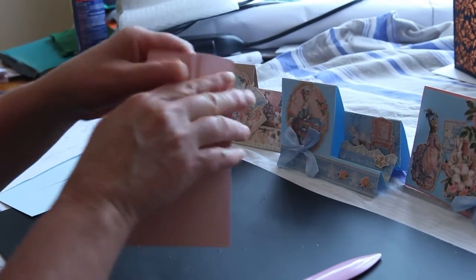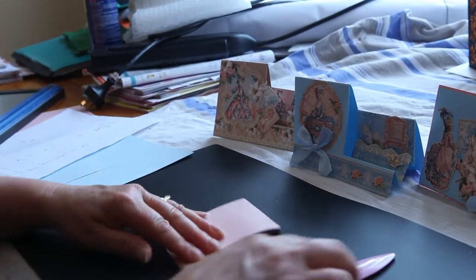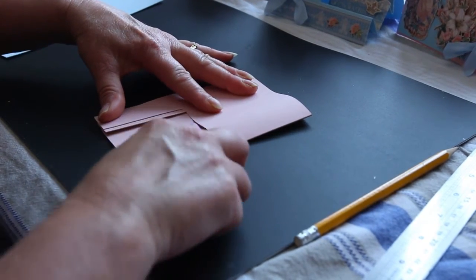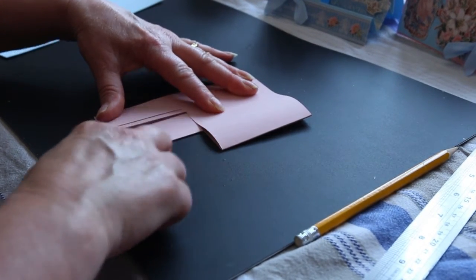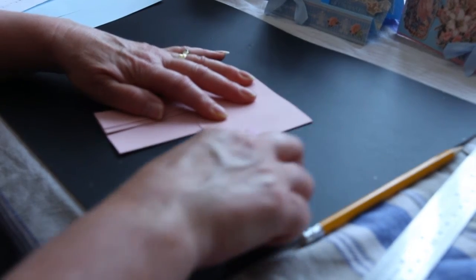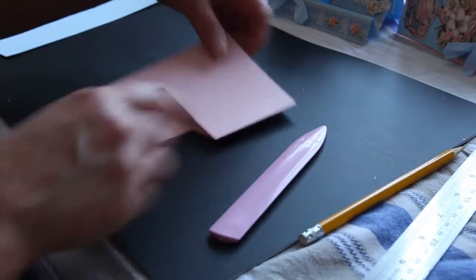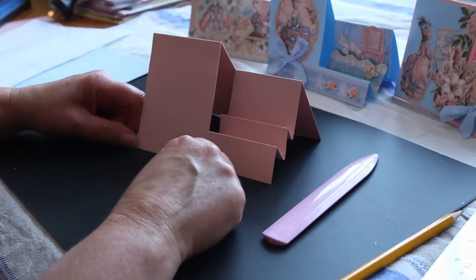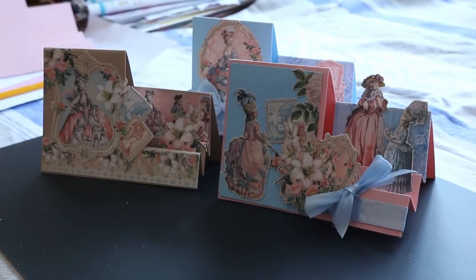So once they're all folded, just get your scorer again and give it a run over to get them nice and crisp. And that is your simple side stepper card, all finished. Thank you for watching.